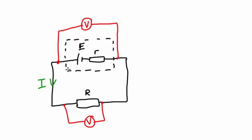Here we have an electrical circuit with a battery connected to a resistor. The battery here is represented inside this dashed line. Within that dashed line we have the EMF of the battery represented here with the symbol E and the internal resistance represented with the symbol r.